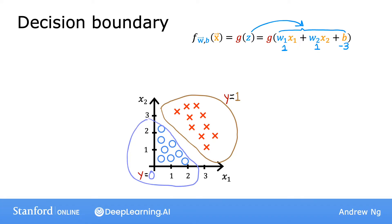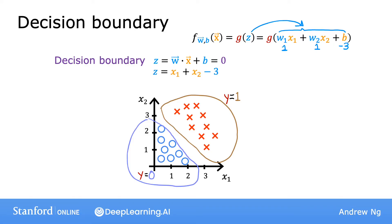Let's figure out when w·x plus b is greater than or equal to 0, and when it is less than 0. There's a very interesting line to look at: when w·x plus b is exactly equal to 0. This line is called the decision boundary, because that's where you're neutral about whether y is 0 or 1. For our parameter values w1=1, w2=1, b=-3, the decision boundary is x1 plus x2 minus 3 equals 0, which corresponds to the line x1 plus x2 equals 3.